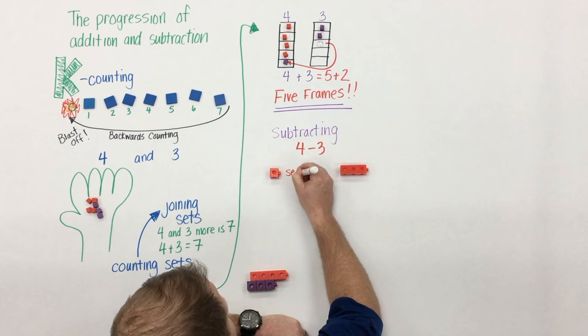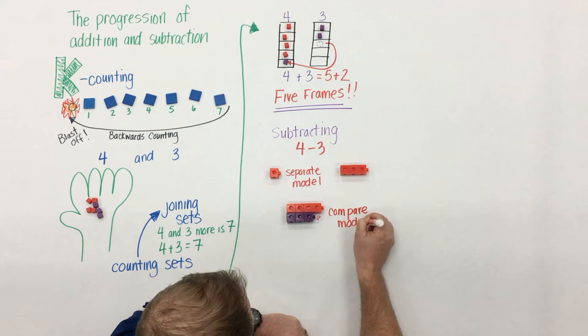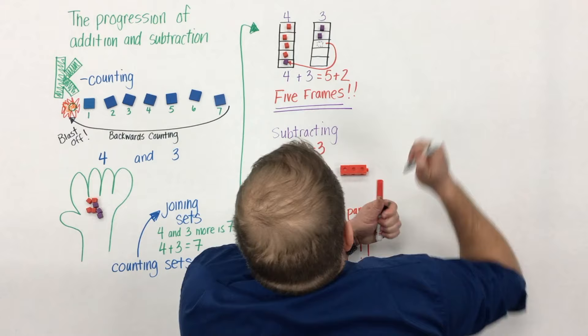In terms of subtracting students can have four minus three and use a separate model or they can also use a compare model. The big piece here is that a context should always drive the strategy that students are using.